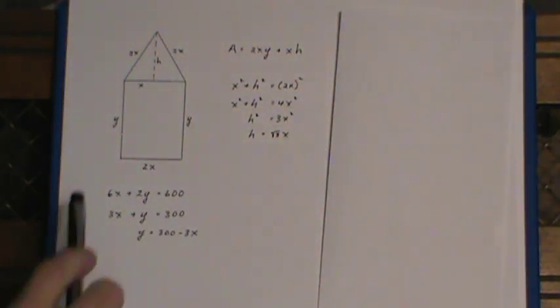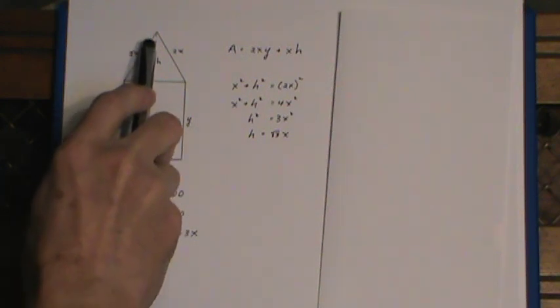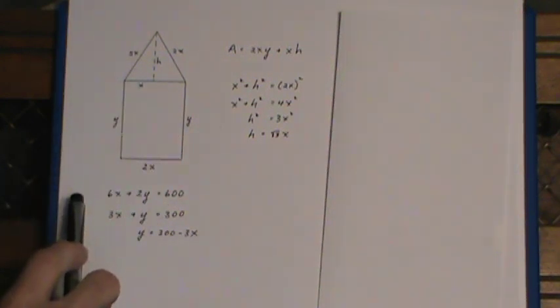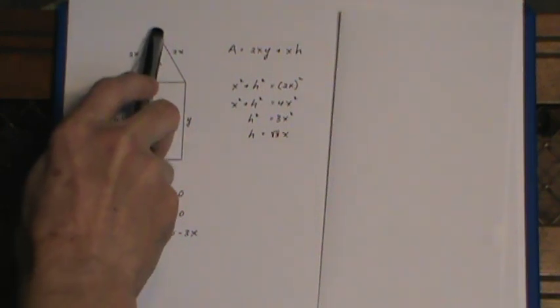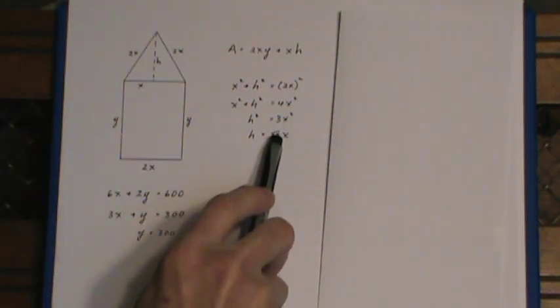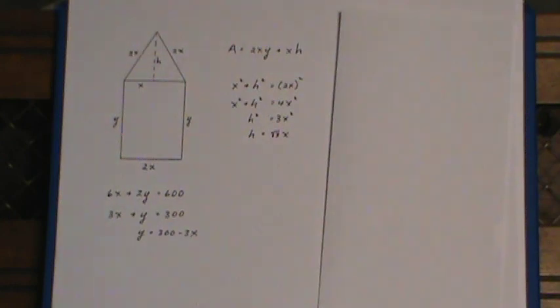If you're familiar with calculus, you might recognize this as being the 30-60-90 triangle, and that triangle had a 2, 1, and root 3 on it, and you can very easily see why this would be root 3x.